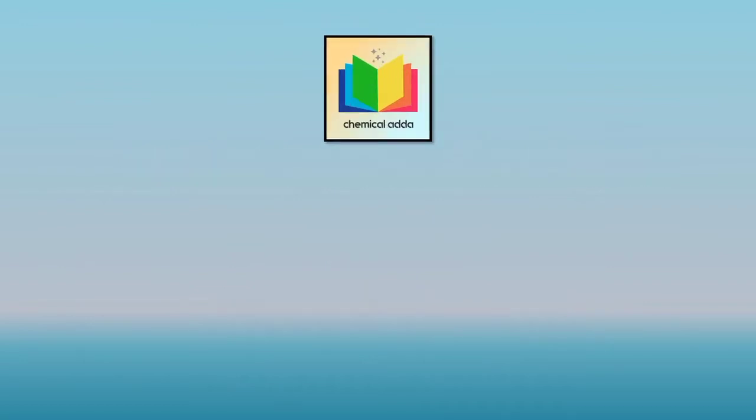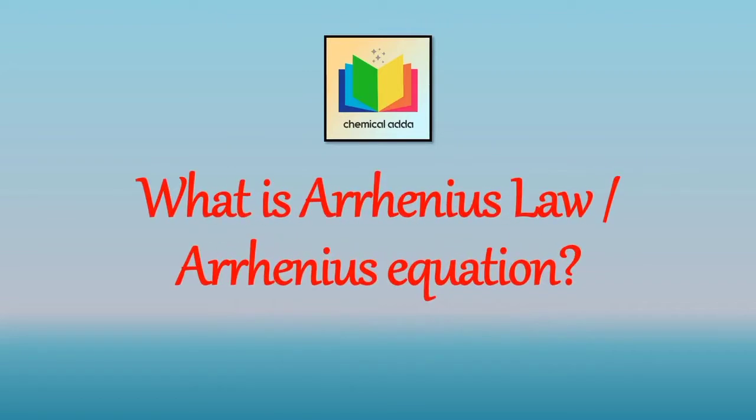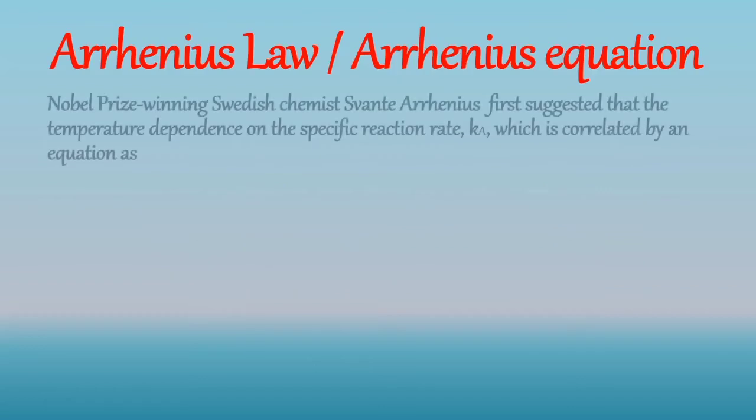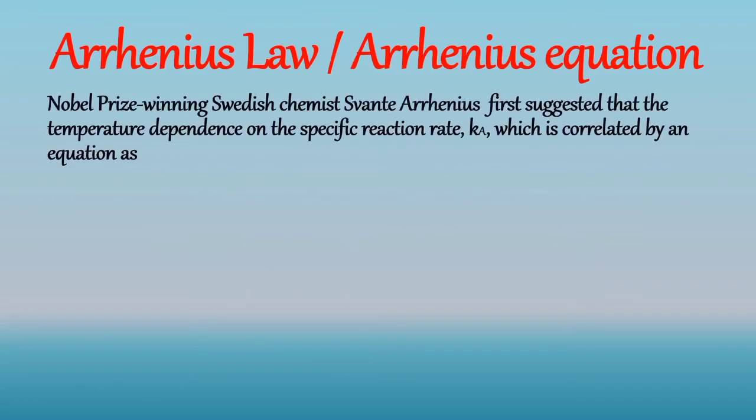So the question is, what is Arrhenius law or Arrhenius equation? The great Nobel Prize-winning Swedish chemist Svante Arrhenius first suggested that the temperature dependence on the specific reaction rate Ka. That means he suggested how reaction rate and temperature are interdependent. This relation is given by equation as Ka is equal to K0 into E raised to minus E by RT. This equation is called as Arrhenius equation or Arrhenius law.